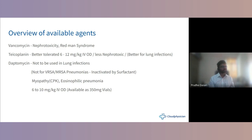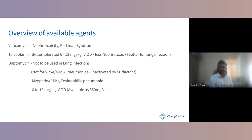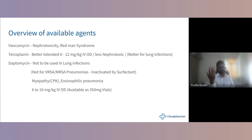Daptomycin is not used for lung infections because it is inactivated by surfactant, making it ineffective for VRSA/MRSA pneumonias. Common known side effects include myopathies — check CPK levels if the patient complains of muscle cramps after starting daptomycin. Eosinophilic pneumonia should be considered if respiratory illness develops within three to four days of starting daptomycin for a non-pulmonary indication. Dosing is 6–10 mg/kg IV once daily, available as 350 mg per vial.